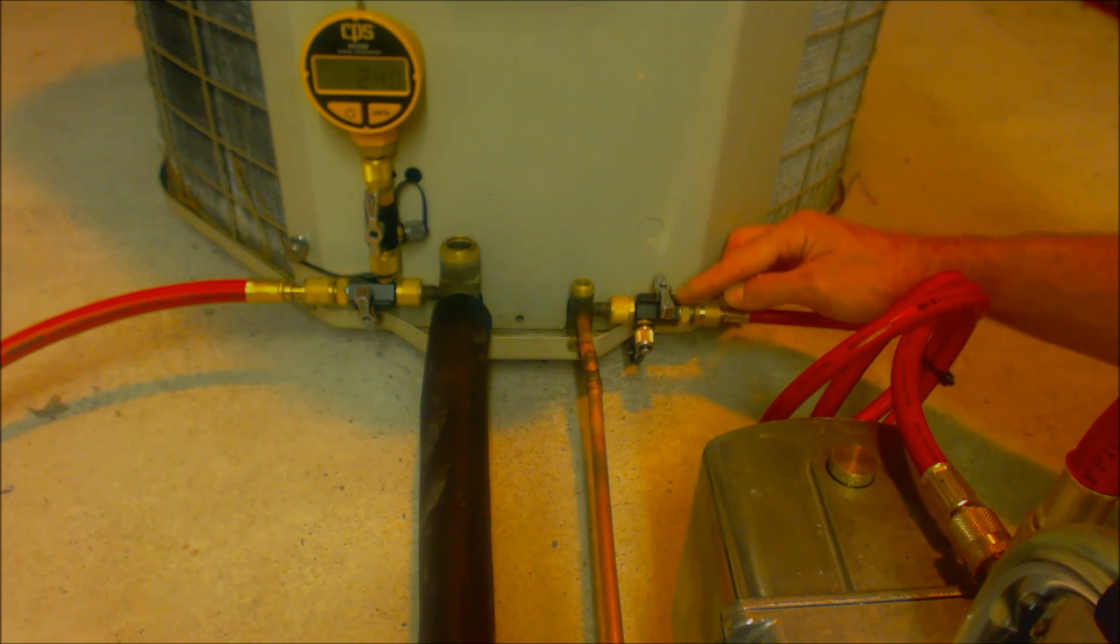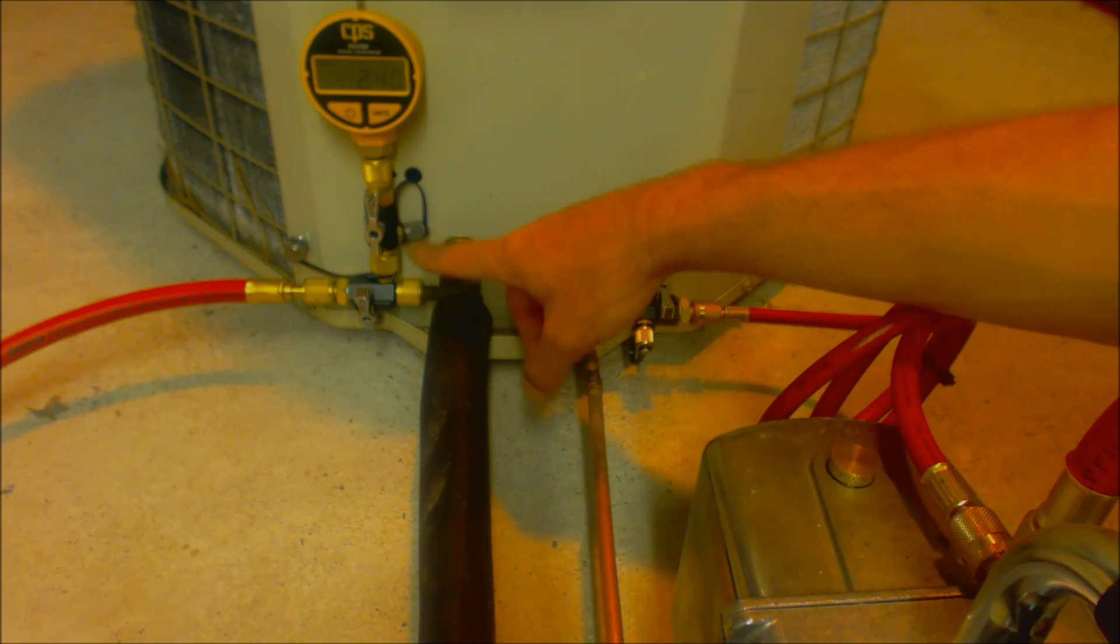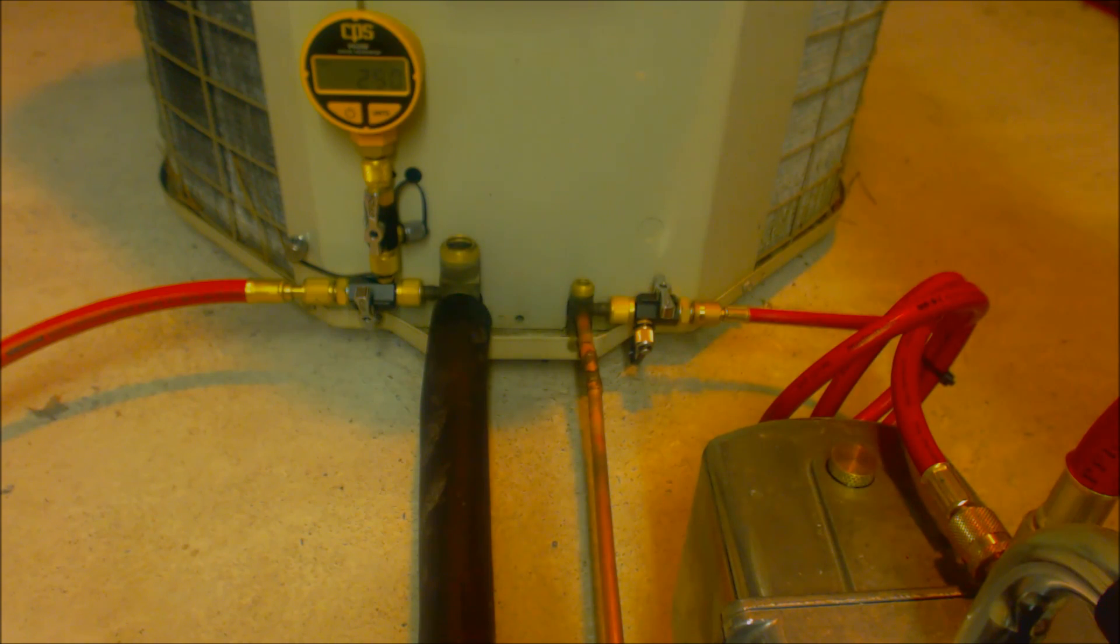These valve core removal tools here are rated down to 20 microns. It's real important that the valve that you're using is vacuum rated. That's why we're using a third valve core removal tool and not a hose with a valve on it.